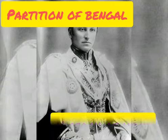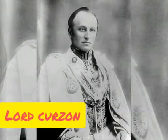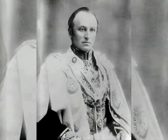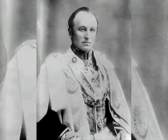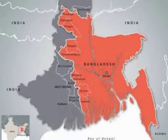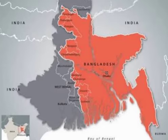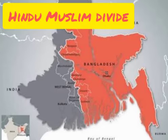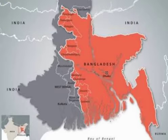The partition of Bengal: in 1899, Lord Curzon was appointed as Viceroy of India. He partitioned Bengal in 1905. The partition led to widespread protests all across India, starting a new phase of the Indian national movement. The idea of partition was devised to suppress political activities against British rule in Bengal by creating a Hindu-Muslim divide.